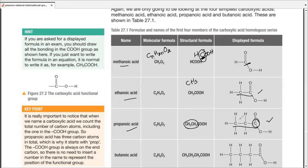Now, if you are asked for a displayed formula in exams, you should draw all the bonds in COOH group as shown over here. Take a look. They have drawn all the bonds and all the atoms in COOH. However, it's pretty normal to write it like this. Now, it's really important to notice when we name a carboxylic acid, we count the total number of carbon atoms, including the one that is present as a part of the functional group. And I've explained it already. Are we good? Yeah. Okay. So moving on.